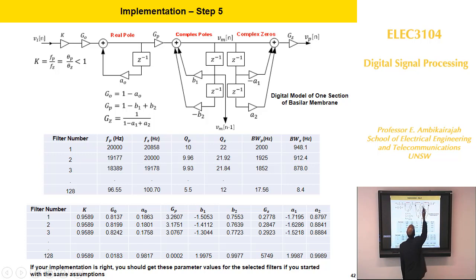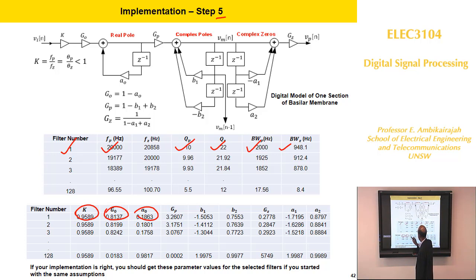Once you are done, step five is the implementation of the filters. Starting with the filter number one, frequency, QP, QZ, we already calculated, then if you use the right equation, right programming, you will find the value of K, G0, A0, GP, B1, B2, GZ, A1, A2 for filter one, using the previous slide. Similarly for filter two and so on for filter eight. This value is at least a guide for you to check where your calculations are correct.